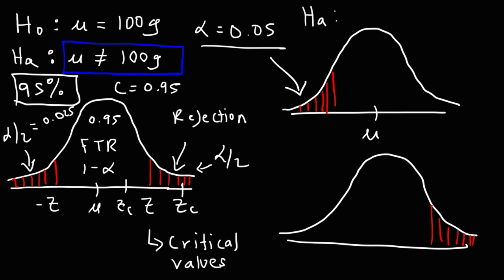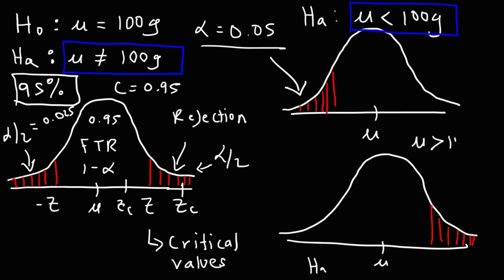You use a left-tailed test when the alternative hypothesis states that the mean is less than some number. If the alternative hypothesis states that the mean is greater than some number, then you would use the right-tailed test.